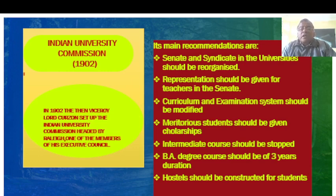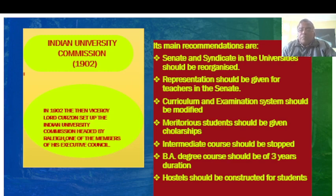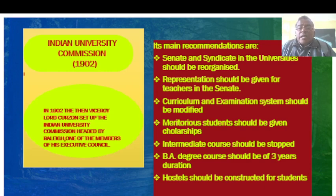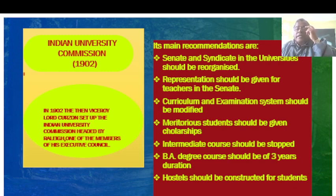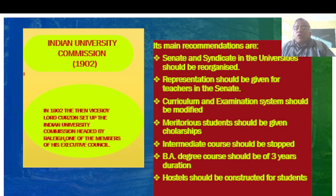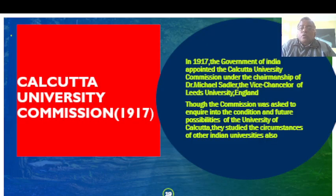Next, the Indian University Commission of 1902. Each commission has its own special characteristic, and this commission was completely devoted to the promotion of college education in India. In 1902, Viceroy Lord Curzon set up the Indian University Commission headed by Raleigh, one of the members of his Executive Council. Its main recommendations: the Senate and Syndicate in the University should be reorganized; representation should be given to teachers in the Senate; curriculum and examination system should be modified; meritorious students should be given scholarships; intermediate course should be stopped; BA degree course should be of 3 years' duration; and a hospital should be constructed for students.